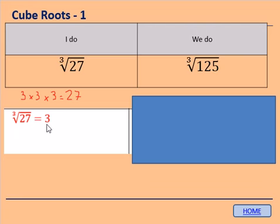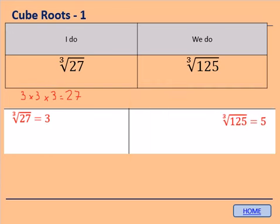Please pause the video here, copy that down, and then try the We Do for yourselves. The We Do was the cube root of 125. Remember that 5 cubed equals 125, so the cube root of 125 is 5. Well done if you got that right. If you didn't, please write it down in your book.